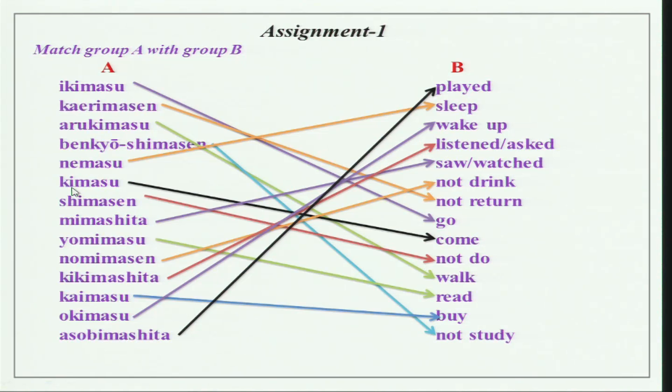Kimasu is used when you are at a point or place and someone comes over there — in that case ikimasu is not used, kimasu is used. Kikimasu — kikimashita — means both to listen and also to ask.